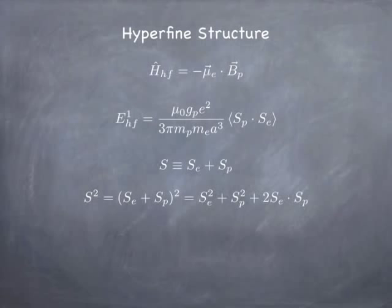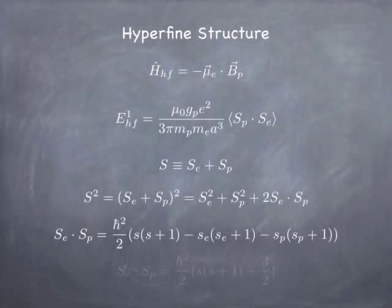And using the same tricks we worked out last time, you can show that there's a relationship between s squared, se squared, sp squared. And since these guys are all spins, the se squared and the sp squared, they're both spin of a half. Those are just definite numbers. And when you plug everything in, you see that the dot product of se and sp depends only on the total spin quantum number, the magnitude of the total spin quantum number.